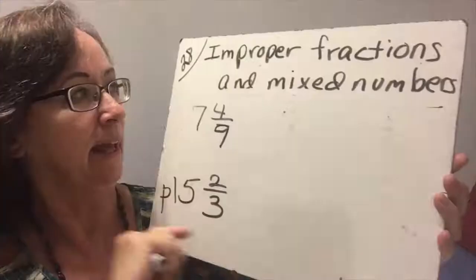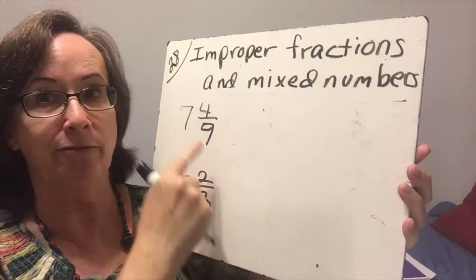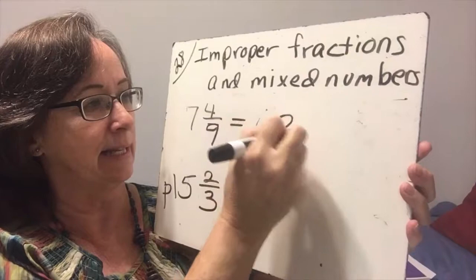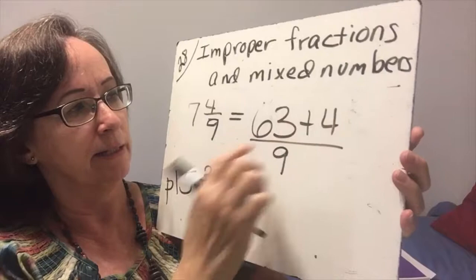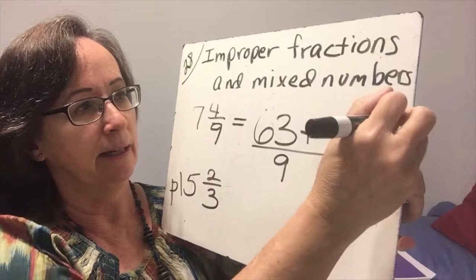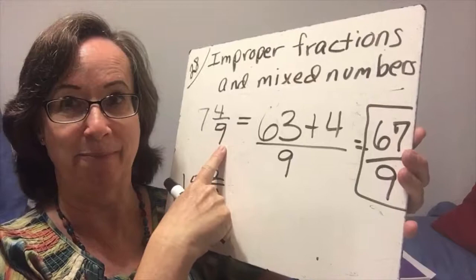So we have 7 and 4 ninths. So we're going to multiply the 7 times the 9 together and get 63 plus 4, the 4 remaining, over 9. So 63 plus 4 is 67 over 9. And that is the improper fraction that goes with that mixed number that is equivalent.